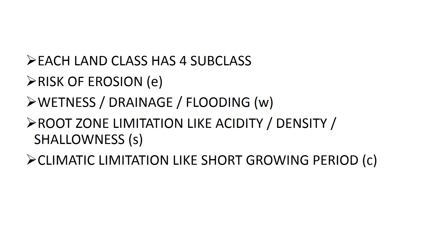Before going to each land class, we should know about subclasses. Each land class has 4 subclasses. You should remember that subclass means limitation. There are 4 subclasses: the first one is risk of erosion — erosion may be done through wind, water, or by any method — symbolized as E. The second one is wetness or drainage or flooding, symbolized as W. The third is root zone limitation, symbolized as S. The fourth is climatic limitation, symbolized as C.